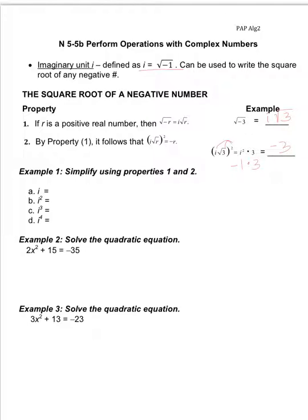Using these properties, we know i equals the square root of negative 1. For i squared, the square root of negative 1 times the square root of negative 1 gives us negative 1, because multiplying a radical times itself gives you the number under the radical.